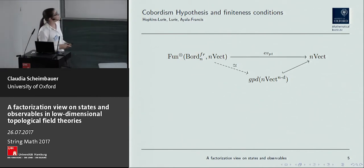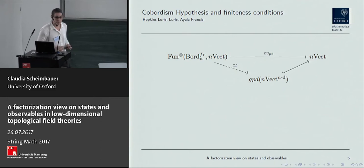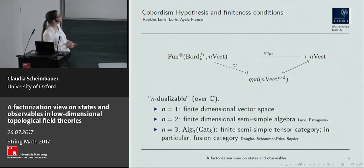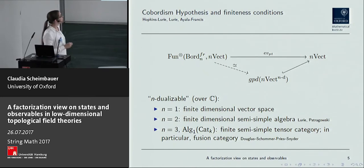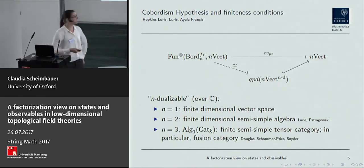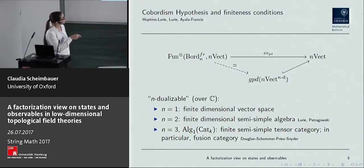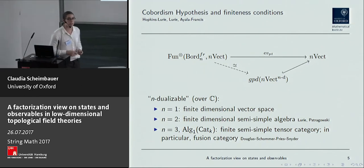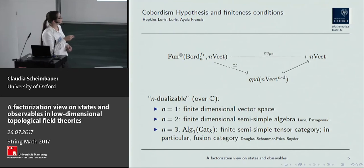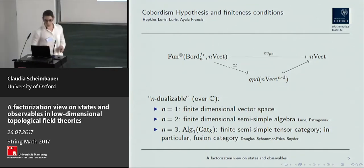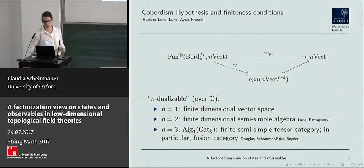So it means n-dualizable. In the examples we had before: n equals 1, you just get a finite-dimensional vector space; n equals 2, you get finite-dimensional semi-simple algebras; for n equals 3, taking ALGE1 of cats, you get finite semi-simple tensor categories. You always get these very strong finiteness conditions — semi-simplicity and things like that. Even the first condition is a little unsatisfying if you think of quantum field theory, where you usually get infinite-dimensional Hilbert spaces. Topological field theories impose these strong finiteness conditions. Is there a way to relax them? I want to talk about an approach to that, which goes under the name of twisted field theories — this has nothing to do with topological twisting or half-twisting.